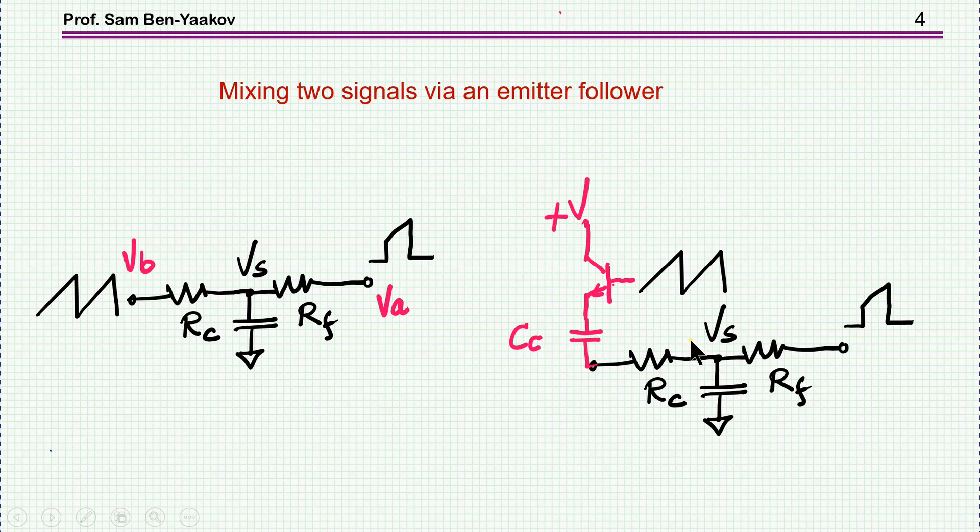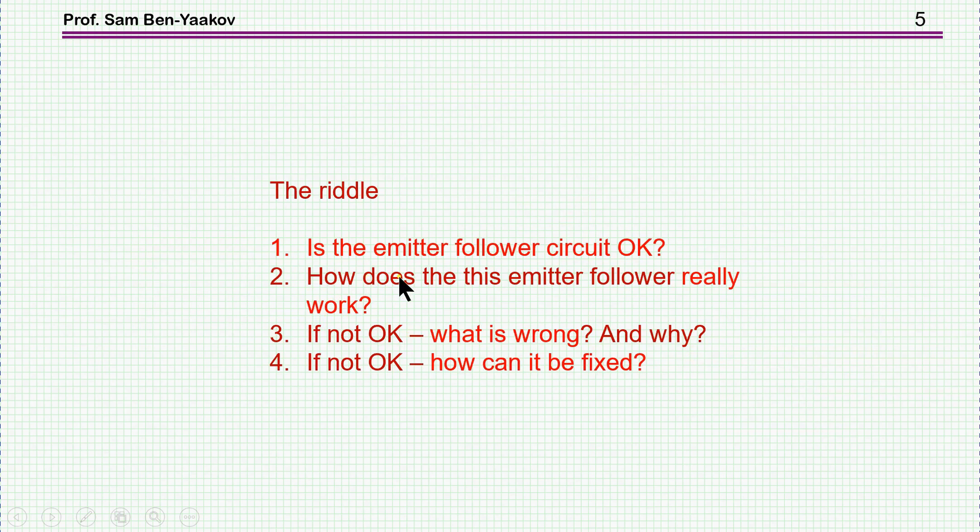So this is the circuit that TI shows in this data sheet and related to this issue. The riddle was: is the emitter follower circuit okay? How does this emitter follower really work? If it's not okay, what is wrong and why, and how can it be fixed?